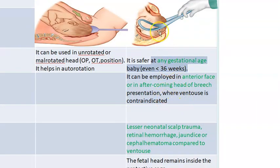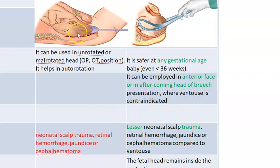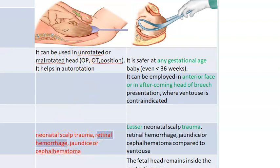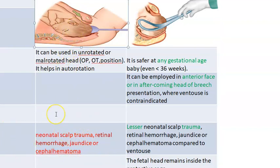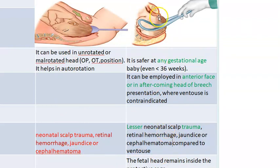Now looking at neonatal outcomes. With vacuum, there can be scalp trauma, retinal hemorrhage - which is quite notable - and cephalhematoma. Cephalhematoma means blood between the periosteum and the skull, so there can be extravasation of blood. Touching the skull there will be a swelling, and that can happen with vacuum.